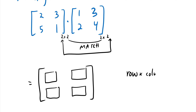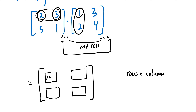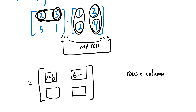The way we multiply matrices is row by column — you take the first row and multiply it by the first column. Multiply the first number by the first number: 2 times 1 is 2, plus the second number times the second number: 3 times 2 is 6, giving 8. Then multiply the same row by the next column: 2 times 3 is 6, and 3 times 4 is 12, giving 18.